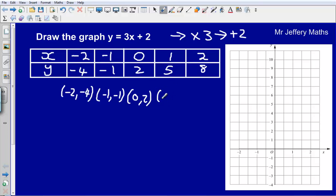The next one is 1, 5. And then the last one is 2, 8. So we have got ourselves 5 coordinates now.